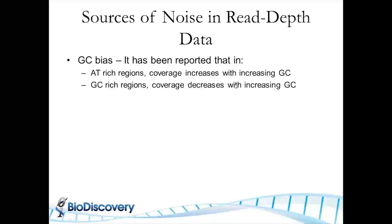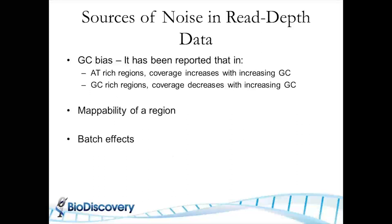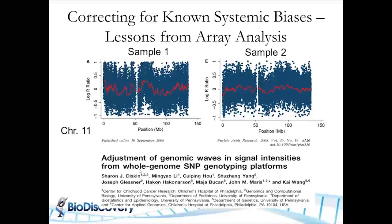But before going there, what are the sources of noise in read depth? One of the biggest sources of noise that has been reported comes with GC bias — specifically, what percentage of GCs are in the sequence — and that has a non-linear effect on the read count. There are other things like mappability of a region, how unique that sequence is, and different types of batch effects with reagents, library prep methods, etc.